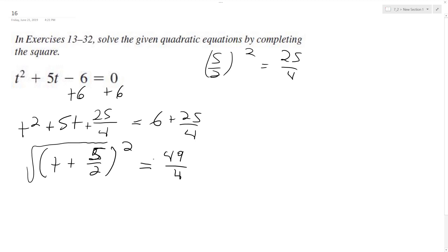So I take the square root of both sides and end up with t plus 5 halves equals plus or minus 7 over 2.